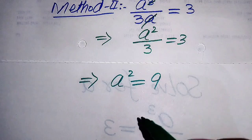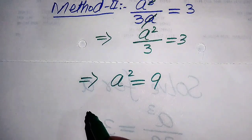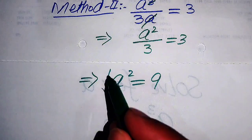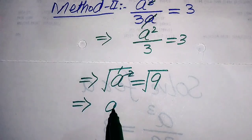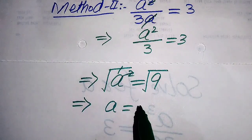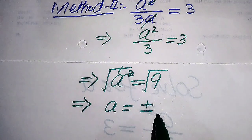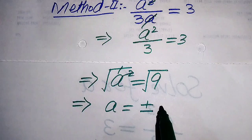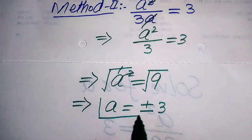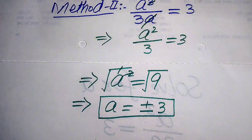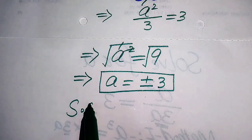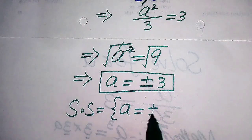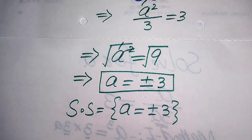To find the values of a, we take the square root on both sides. The square and square root cancel each other, and we write plus or minus on one side. The square root of 9 is 3, so we get a equals plus or minus 3. These are the two roots from the second method, and we already verified in the first method that both satisfy the given equation. So the solution set is a equals plus or minus 3. Thank you for watching — please subscribe to the channel for more videos.